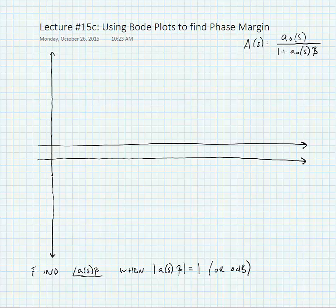We're going to look at using a Bode plot in order to estimate what we call the phase margin of an op amp. What we're going to try and do is to find the angle of our loop gain when the magnitude of our loop gain is equal to 1 or 0 dB.